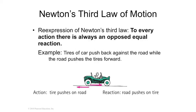Sometimes these pairs are not obvious. It's kind of easy when you say I'm shoving on the basketball and the basketball is exerting a force on my hand, or the oar is exerting a force on the water and the water is pushing the oar, which propels the boat. Sometimes it's easy, sometimes it's not.